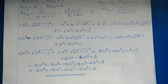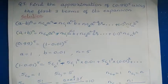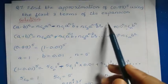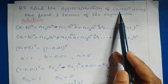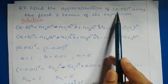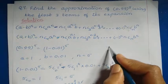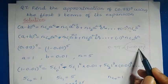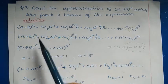Next is question number 7: find the approximation of 0.99⁵ using the first three terms of its expansion. Finding the exact value is very difficult, so we need to find just the approximate value. We can write 0.99 as 1 − 0.01, giving us two terms, so we can apply the binomial theorem — with a minus sign, so we use the negative binomial theorem.